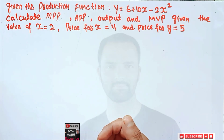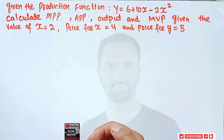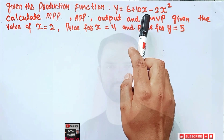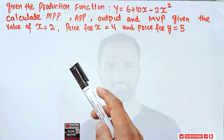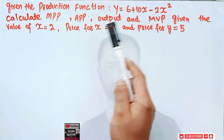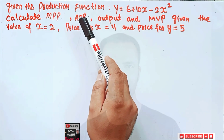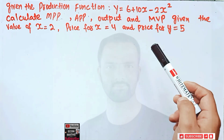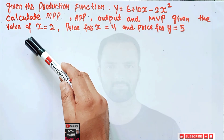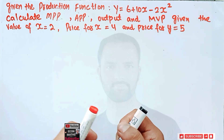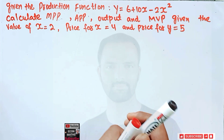Hi, this is Halal. In this video on the mathematical economics series, we will try to solve a problem. The question is: given the production function y = 6 + 10x - 2x², where y is the output and x is the input. We have to calculate the marginal physical product, average physical product, total output, and marginal value product, given x = 2, price of input = 4, and price of output = 5.